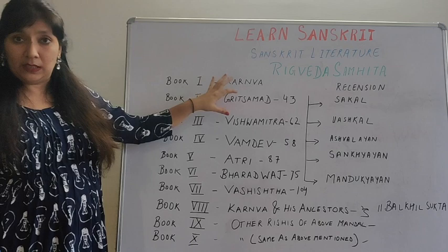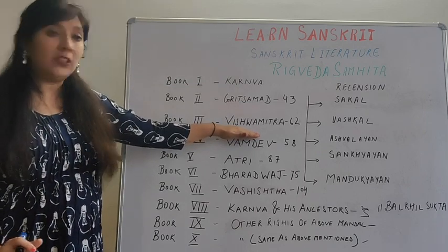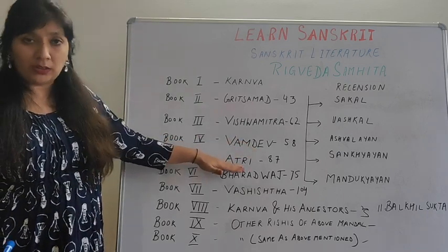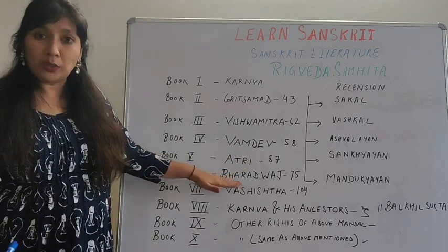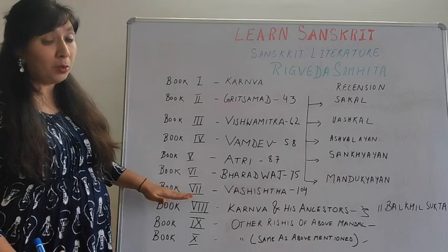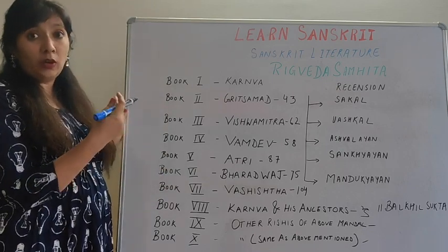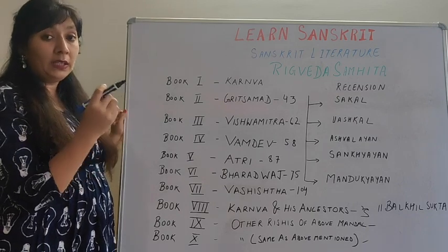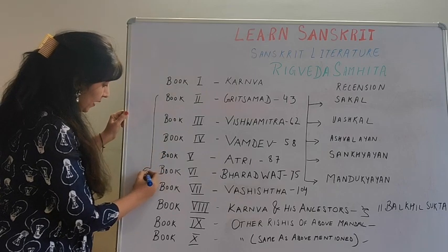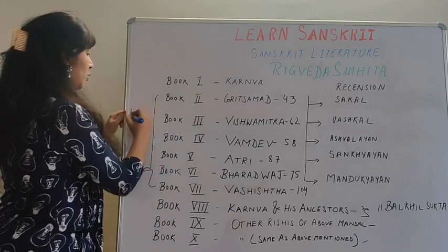Book two: Kritsamad is the composer of the second mandala. Book three: Vishwamitra is the composer of the third mandala. Book four: Vamadev is the composer. Book five: sage Atri is the composer. Book seven, the saptamandala, is written by Vashisht. When we talk about different rishis or sages, we should understand that from book two to book seven these rishis and their families contributed in making that mandala. That is why from book two to book seven it is called a family book.